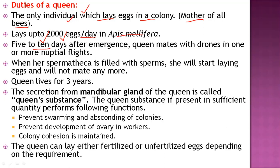Five to ten days after emergence, the queen performs a nuptial flight and mates with drones in one or more flights. After the completion of fertilization, the queen returns and starts laying eggs. When her spermatheca is filled with sperm, she will start laying eggs and will not mate with the drone anymore. The queen's life cycle is about three years.